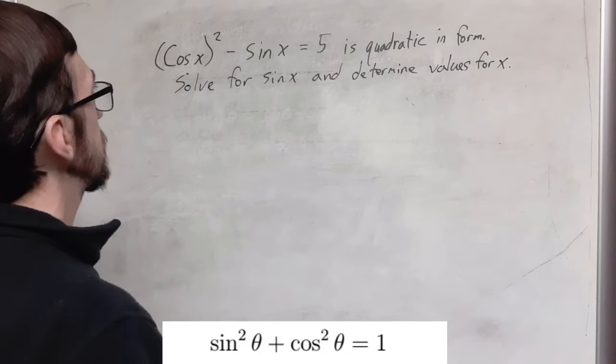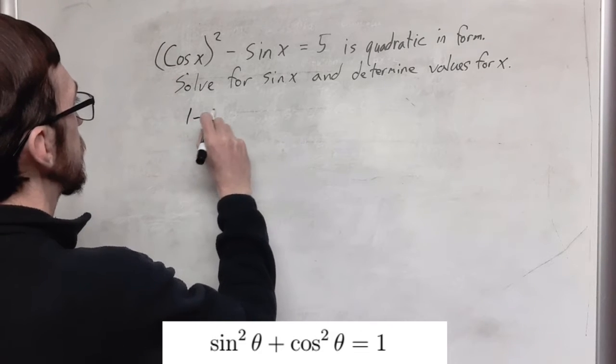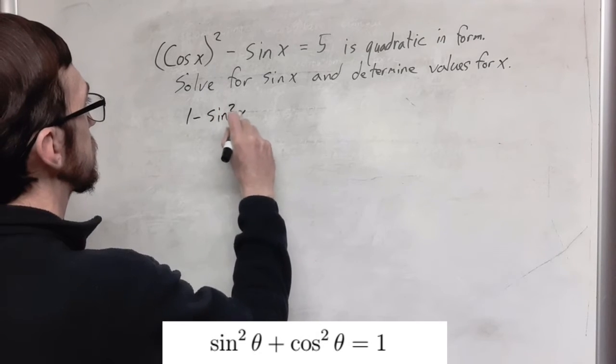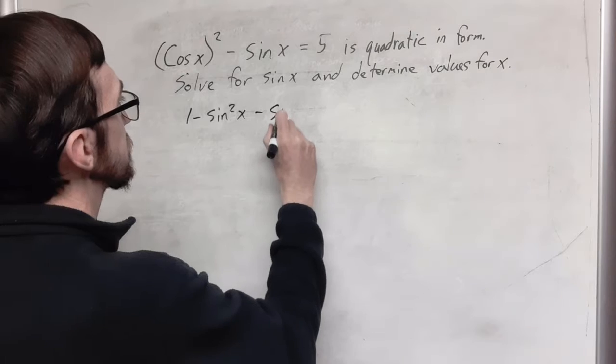So I'm going to take the cosine squared x out and replace it with 1 minus sine squared x, and then the rest of this equation stays the same.